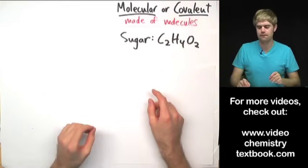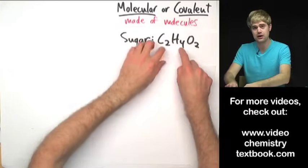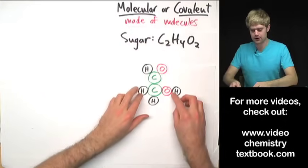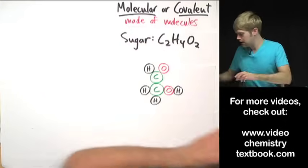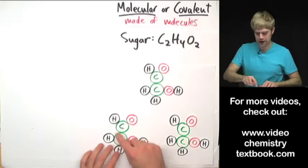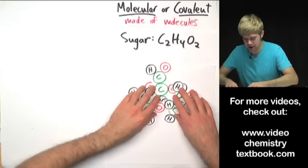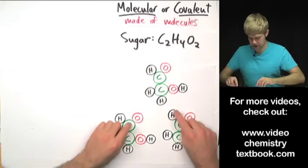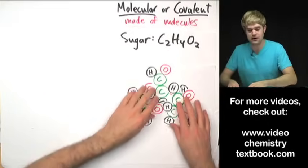Sugar is a very common type of covalent compound and it is made of molecules where I have these atoms here stuck together in a clump—two carbons, four hydrogens, and two oxygens. So a grain of sugar would look like this. It would look like a number of different sugar molecules that have all kind of come together and formed a clump here. But the big deal here is that these molecules are individual clumps of atoms that then come together to make stuff.